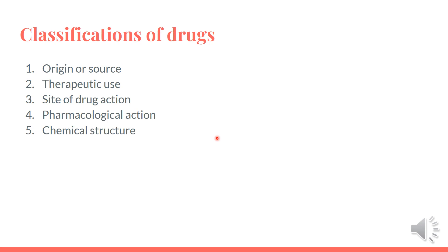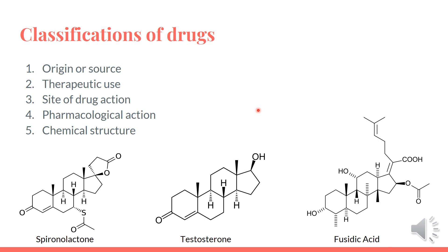Drugs are classified in a number of different ways depending on where and how the drugs are being used. The methods of most interest to medicinal chemists are chemical structure and pharmacological action, which includes the site of action and target system. Unfortunately, classifying drugs according to their chemical structure has the disadvantage that members of the same structural group often exhibit very different types of pharmacological activity.